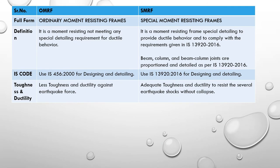Regarding toughness and ductility: when using an ordinary moment resisting frame, both toughness and ductility against seismic force are less. In the case of a special moment resisting frame, we get adequate toughness and ductility to resist seismic effects — giving sufficient time to exit the building before failure occurs. SMRF is therefore better for functional safety requirements, but the cost of design and construction is automatically higher.